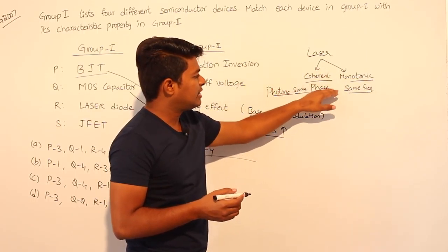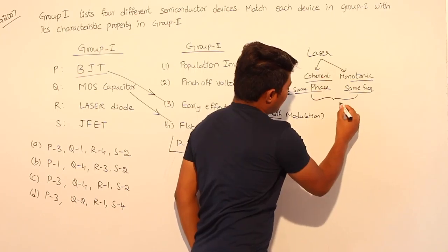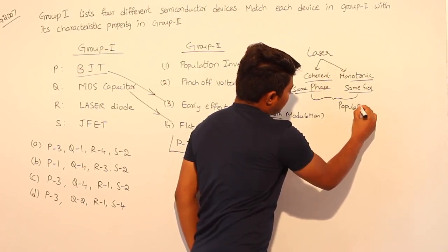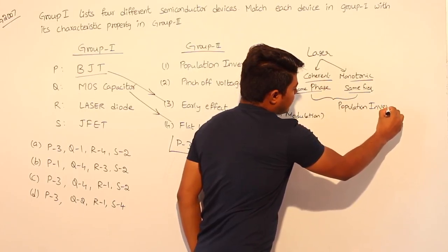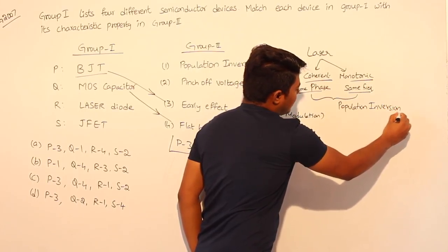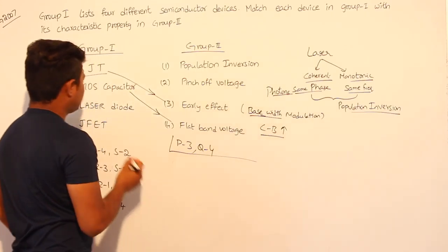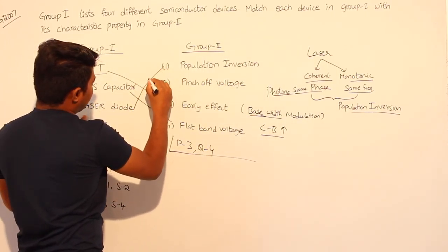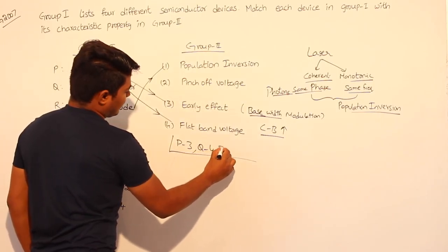Apart from coherence and monotonic, a laser uses a phenomenon called population inversion. Population inversion is one of the important characteristics of the laser diode. Looking at the options, laser diode is associated with population inversion, so for R, it is 1.